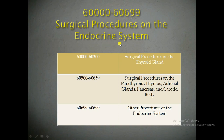The endocrine system consists of glands like thyroid gland, parathyroid, thymus, and adrenal. Any procedures performed on these glands we have to bill from CPT code range 60,000 to 60,699. Here is a list of each gland's procedures and the corresponding CPT code range.